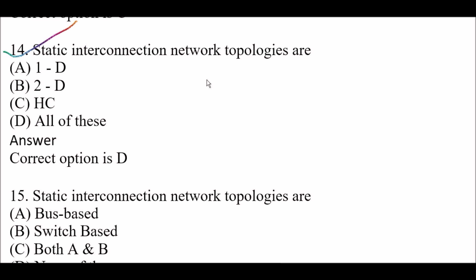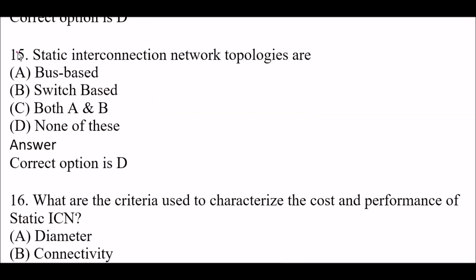Next question: static interconnection network topologies are — option A, 1D (one-dimensional); option B, two-dimensional; option C, FC; option D, all of these. The right answer is option D, all of these. Static interconnection network topologies are not bus-based, not switch-based — so the answer is none of these.